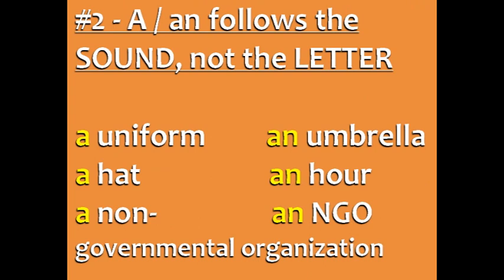Number two: whether you use a or an follows the sound, not the letter, of the next word. For example, we say 'a uniform' because 'uniform' starts with a 'yuh' sound, but 'an umbrella' because 'umbrella' starts with an 'uh' sound — a vowel sound.